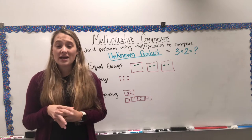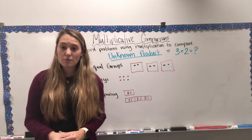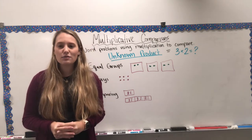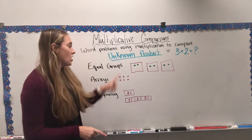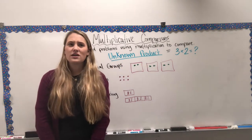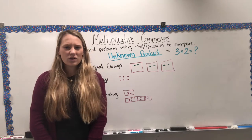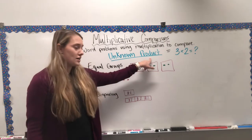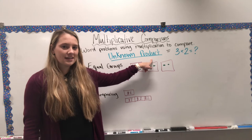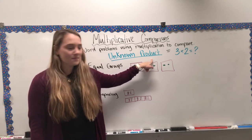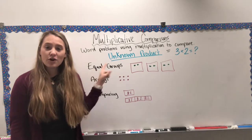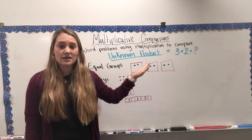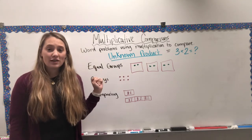It's important to know that it uses word problems. Today, we're going to be focusing on multiplicative comparisons with an unknown product. If there is an unknown product — unknown means you don't know what it is. And a product is the answer to a multiplication problem. So an unknown product means we don't know what the answer is to the problem. I'm going to show you what the equation looks like.